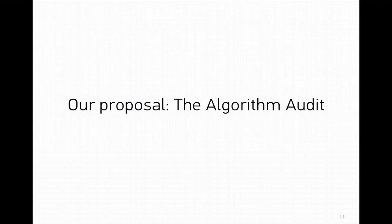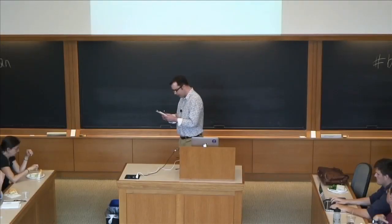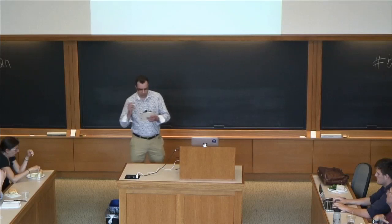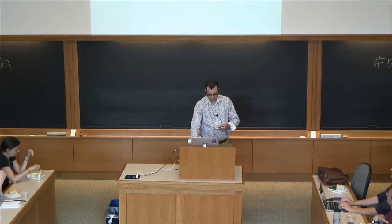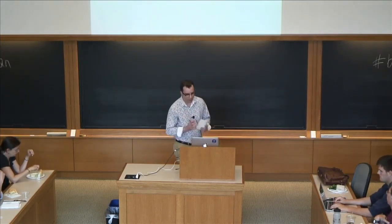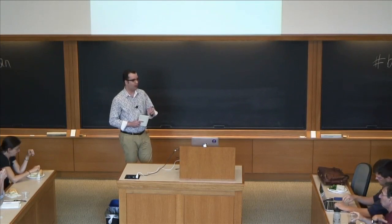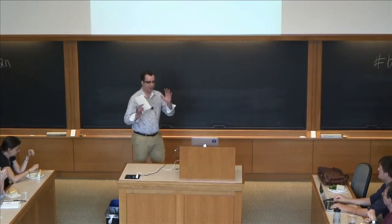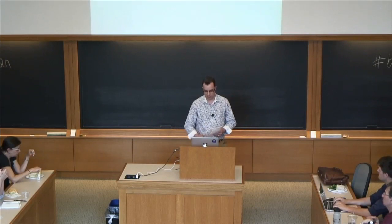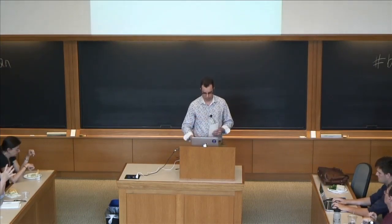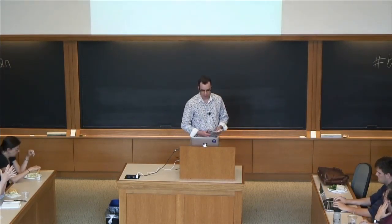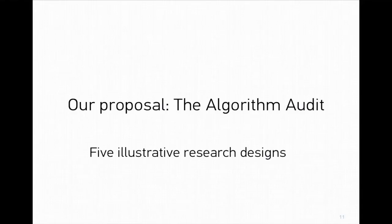Our proposal is the algorithm audit. I'm going to give you five example research designs of how you might do an algorithm audit. These line up with other things people have proposed, and I'll say why I think one is a little better than the other, then move on to what we're going to do. Our example is Facebook, but this actually is a broad topic — it could be any platform with algorithmically curated content.